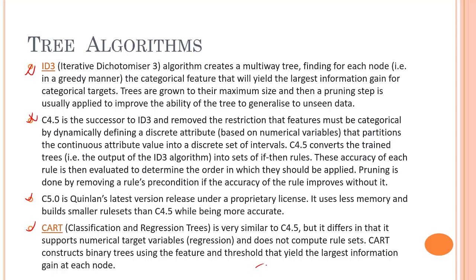You can pause the screen to read about ID3, C4.5, and C5.0 for a more descriptive perspective. In a nutshell, ID3 selects the categorical feature that yields the highest information gain for the categorical target. C4.5 is the successor of ID3 and expands upon it. We will talk about information gain and attribute selection measures shortly.